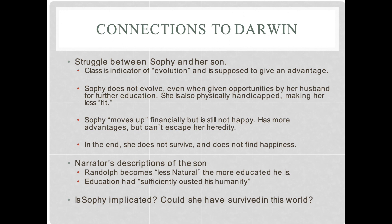This is a very bleak idea — that you can't overcome disadvantages, that once you're born into a certain level, that's it. Sophie does not survive. She doesn't find happiness because she's not able to adapt and evolve, constrained by the heredity of her social class and by the eventual physical handicapping that comes through her service and labor. She's injured on the job, and that limits her throughout the rest of her life.